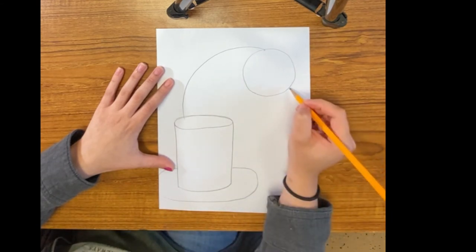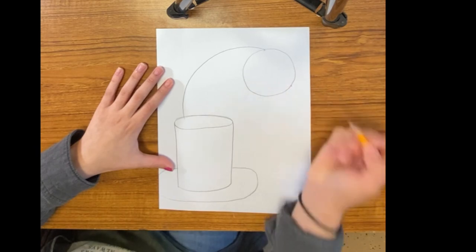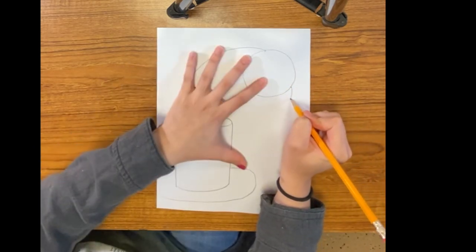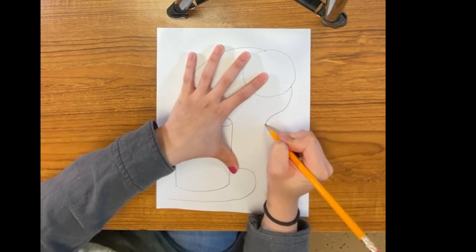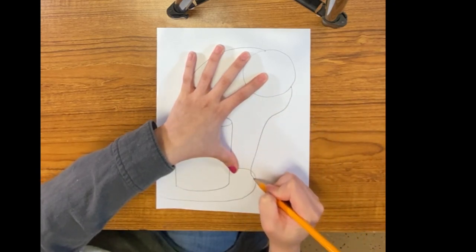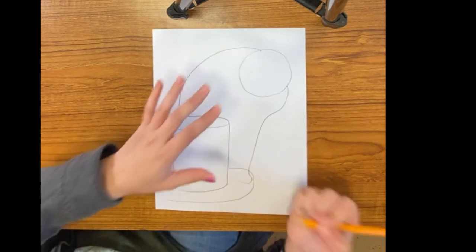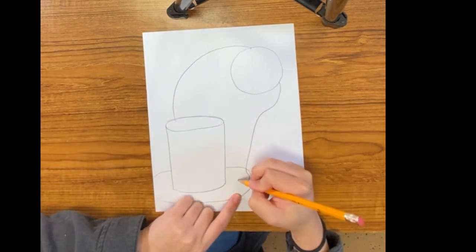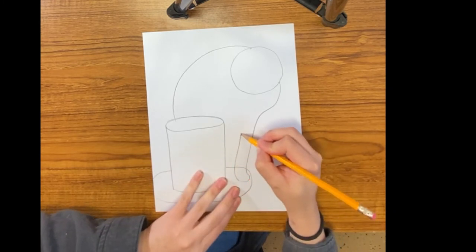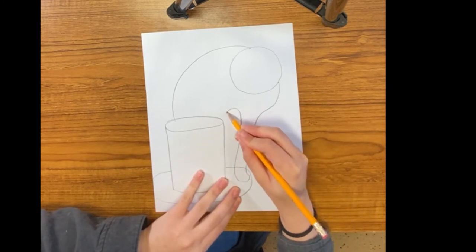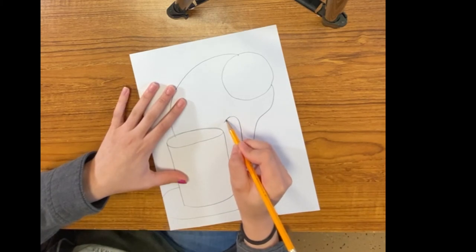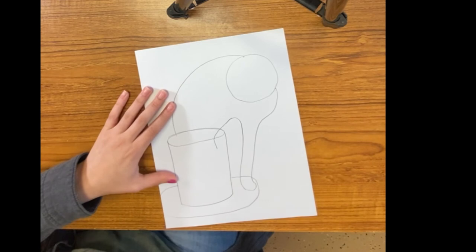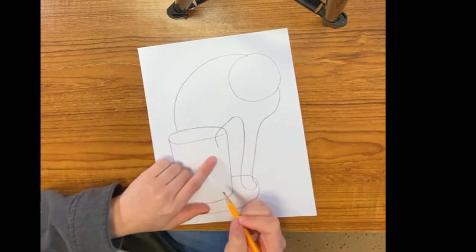Next, we're going to start here and then start going inward. Notice that inward curve. And go up. That's for the cat's foot or paw. I'm going to go back up. This will be for the paw that's going inside of the fishbowl.